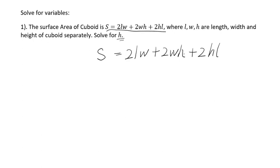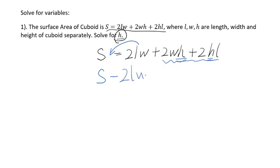First of all, you need to separate this variable H on one side. So you need to check in this formula where H appears. I can find it here and here. So you need to put these two expressions on one side. I need to move 2LW to the left side. I will change the sign so that I can get S minus 2LW equals 2WH plus 2HL.